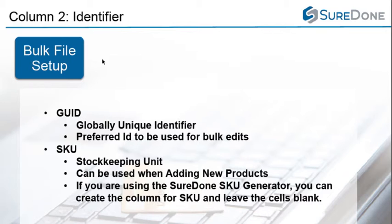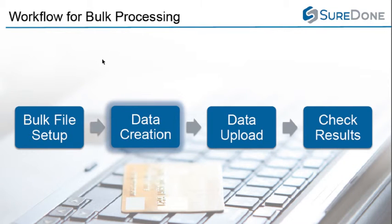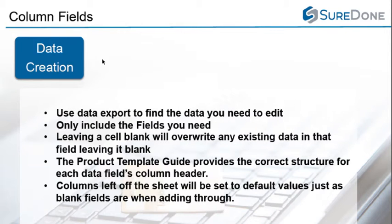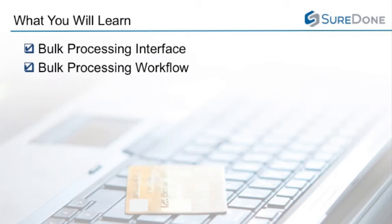In terms of data creation, we want to make sure that we only add the columns that we need to add or edit, as adding columns and leaving the cells blank will override the data that already exists with an empty value. The guide provides both the proper column headers and what acceptable data is for that field. For example, stock will take any integer, condition will take any plain text field, and so on. Any columns you leave off the sheet during a bulk add will default to the values selected in your default channel settings.